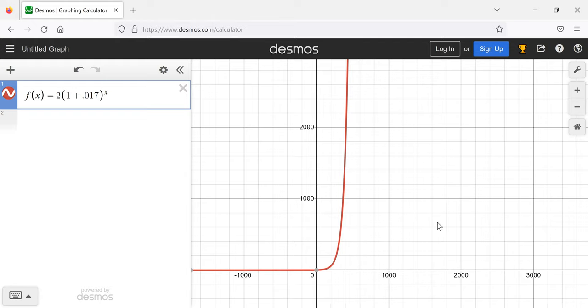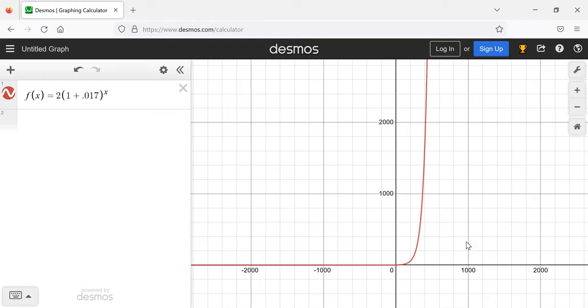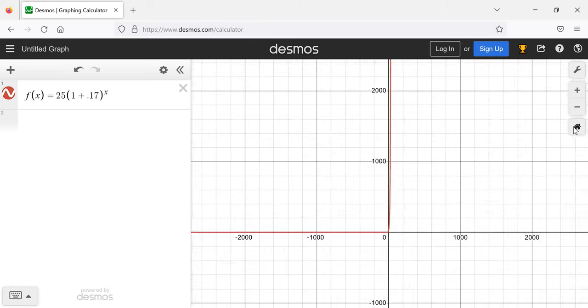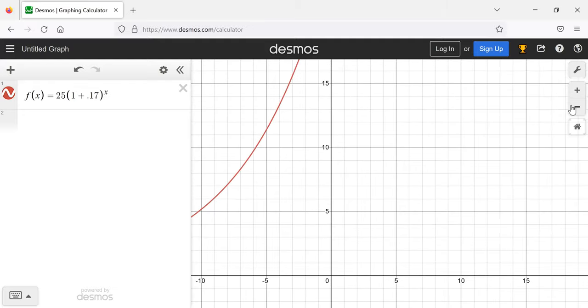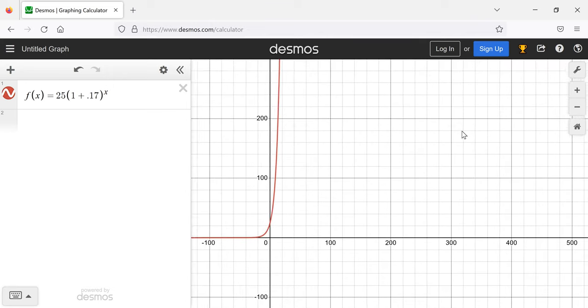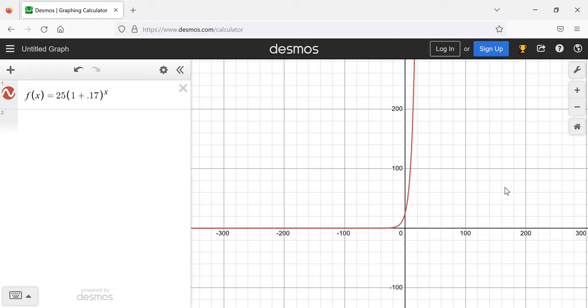That's obviously not the only property that this graph has, but it's probably the most important one. As long as whatever I have here is positive, and as long as I have this addition, the details don't really matter that much. They change how quickly the graph is growing a bit, but all exponential growth looks basically like this.